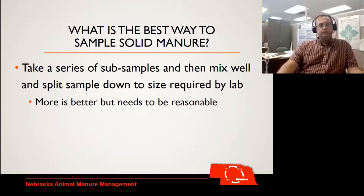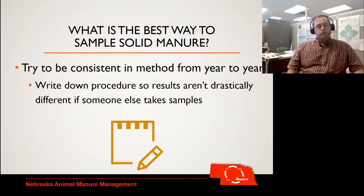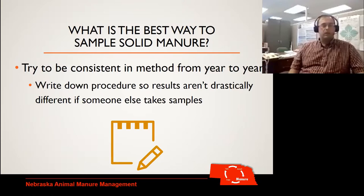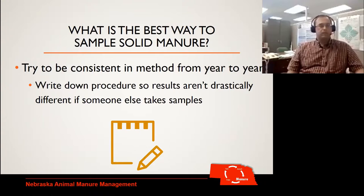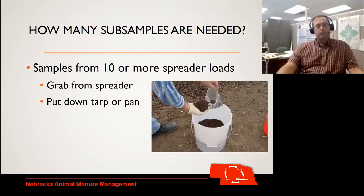Whatever method you're doing, if we're doing solid manure, the key is to take a lot of subsamples and then mix those well — the more the better. It still has to be something reasonable; none of us are going to take 50 subsamples, even though that would give really good results. The key with the amount is how variable that manure is. Also, whatever you do, write down that protocol because we want to be consistent from year to year. If I grab it one way one year and a totally different way the next, those differences in the test are probably just as likely to be from the sampling method as from the actual manure nutrient content itself.